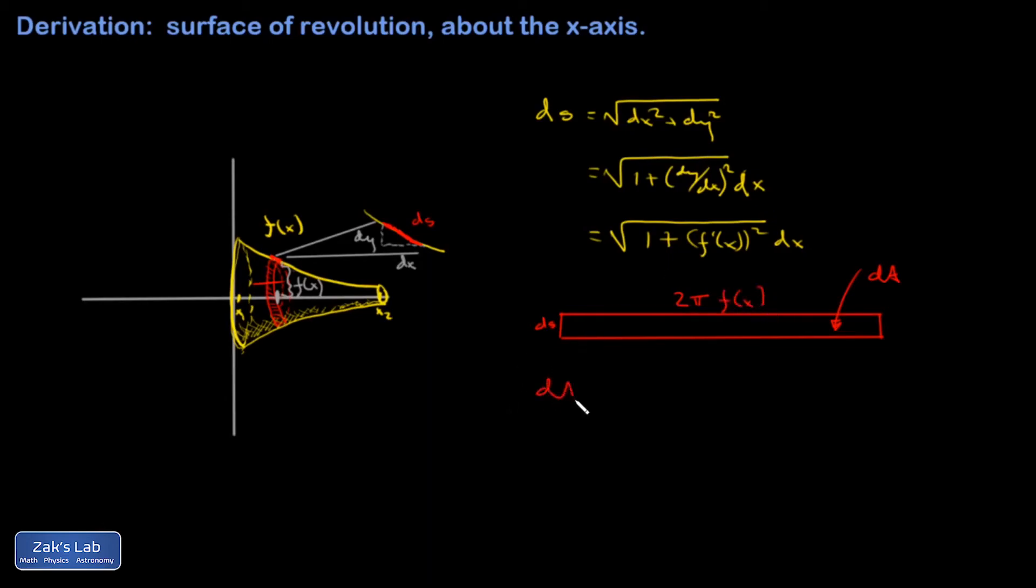And I arrive at an expression for the infinitesimal contribution to area. If I plug in then what I worked out for ds, I get 2π f of x square root 1 plus f prime of x squared dx.